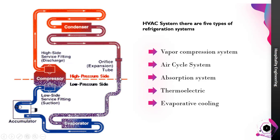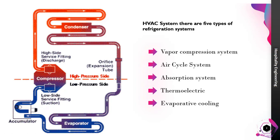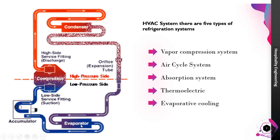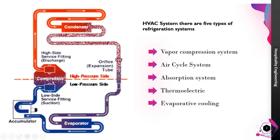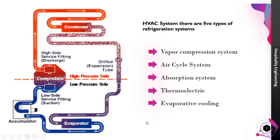While the pressure is reduced drastically as required by the evaporator, the temperature also reduces. This low-temperature saturated vapor comes into the evaporator, where it starts to evaporate by cooling the chilled water. This evaporator gas, when it comes out, becomes the dry, low-pressure, low-temperature gas, which is collected in the accumulator. From the accumulator, this low-temperature, low-pressure gas goes back to the compressor, and thus the cycle continues in the Vapor Compressor System.